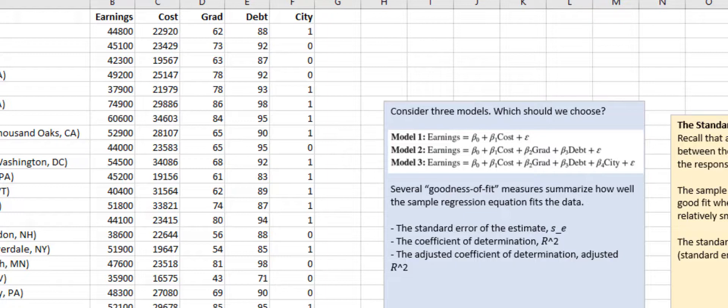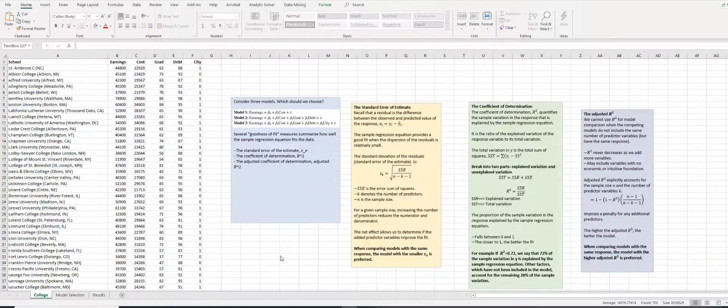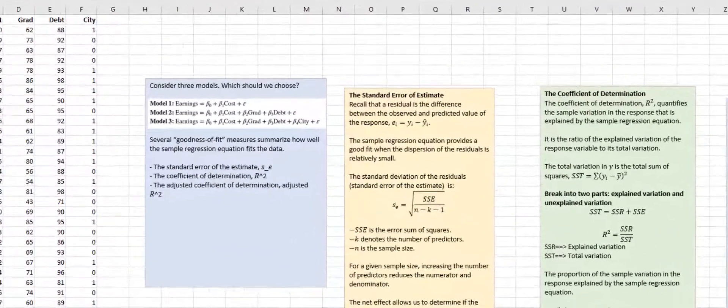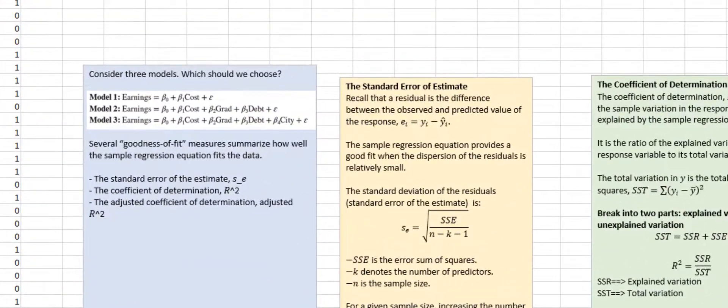Here, we are interested in analyzing factors that may influence post-college annual earnings for 116 colleges. Therefore, we will estimate three models using a combination of four predictor variables, and we want to determine which sample regression equation best explains earnings.